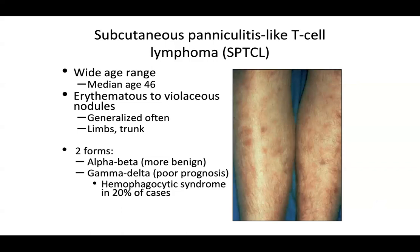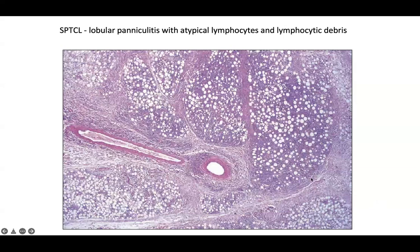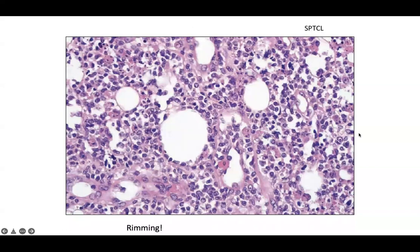From low power, you see what looks like a lobular paniculitis with lots of inflammation between individual adipocytes. However, these are atypical lymphocytes, and clonality testing would most likely return positive for T-cell clonality. Determining whether they predominantly express alpha-beta or gamma-delta TCRs is important for prognosis. On high power, you see individual adipocytes with cells in single-file rimming them — so-called rimming — though it can be difficult to tell if these are truly atypical or clonal without immunohistochemistry and molecular testing.